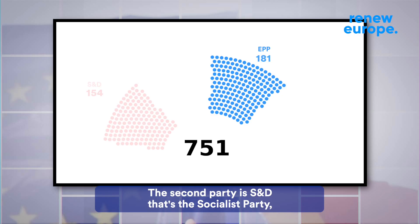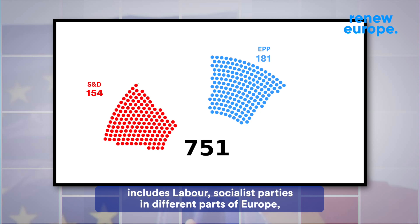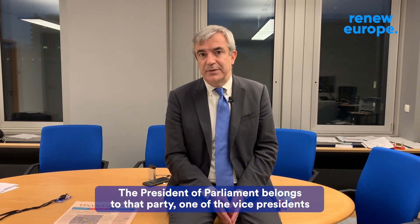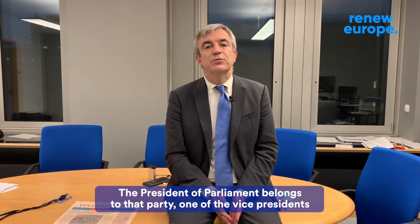The second party is the S&D, the Socialist Party. It includes Labour and Socialist parties in different parts of Europe. The President of Parliament belongs to that party, and one of the Vice Presidents of the Commission as well.